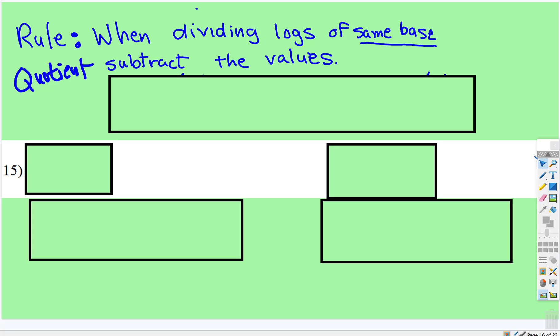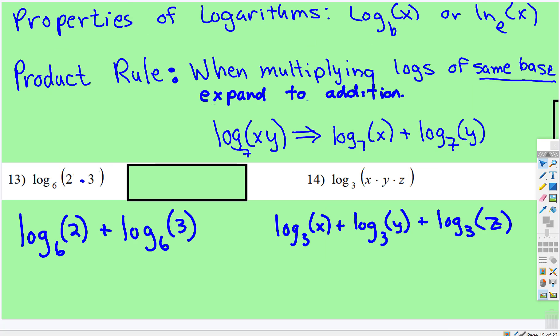The quotient rule says, remember it's going to be the inverse of the product rule, because multiplication and division are inverses, so the properties are inverses. The product rule says that when multiplying logs of the same base, expand to addition.